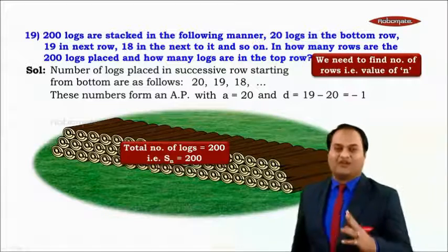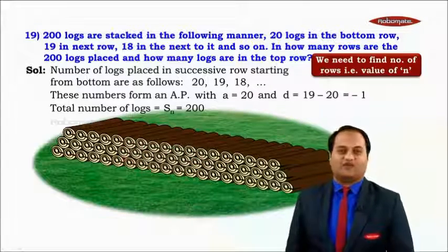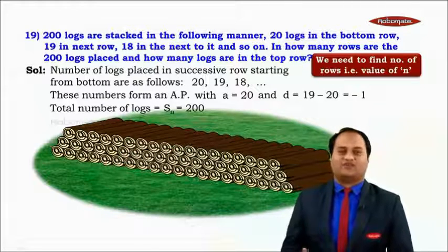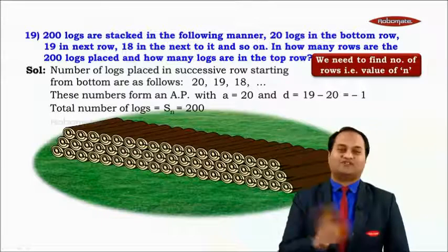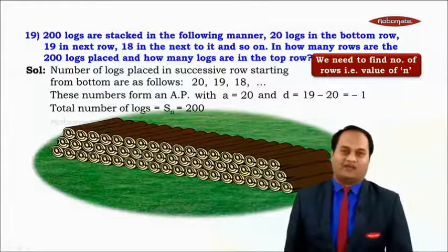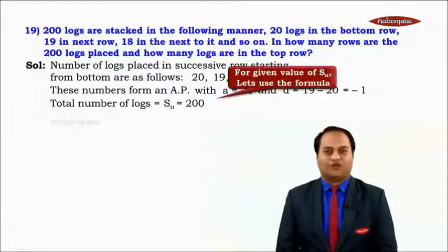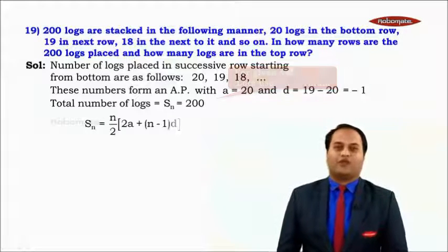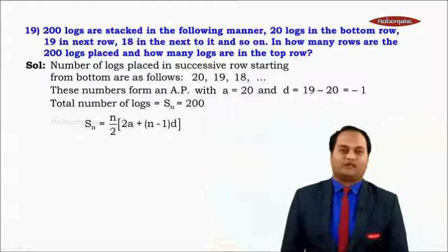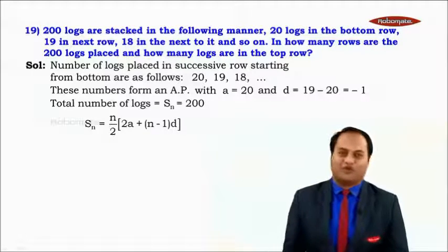Now let's solve. The total number of logs is Sn = 200. Sn, a, and d are all known; we need to find n. We use the formula: Sn = n/2 × (2a + (n−1) × d). We use this formula because d is known to us.